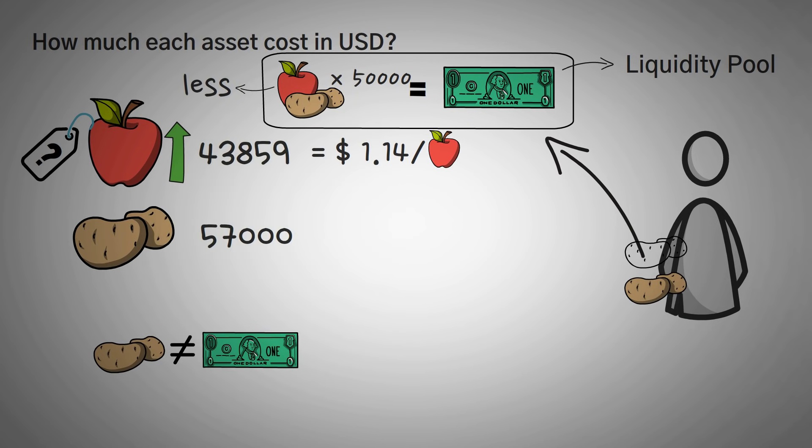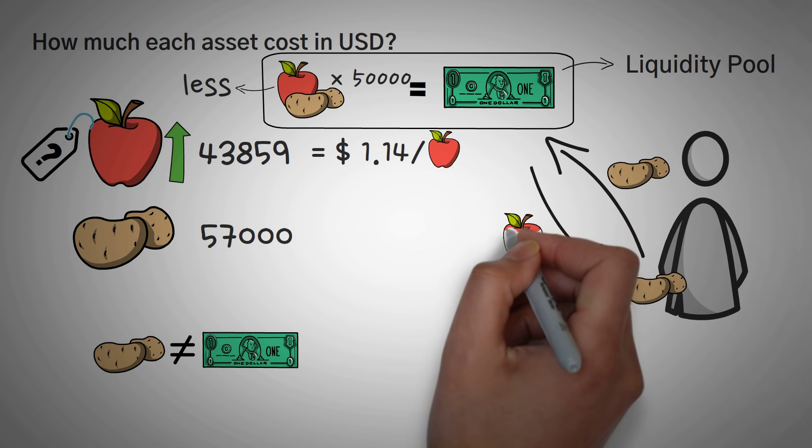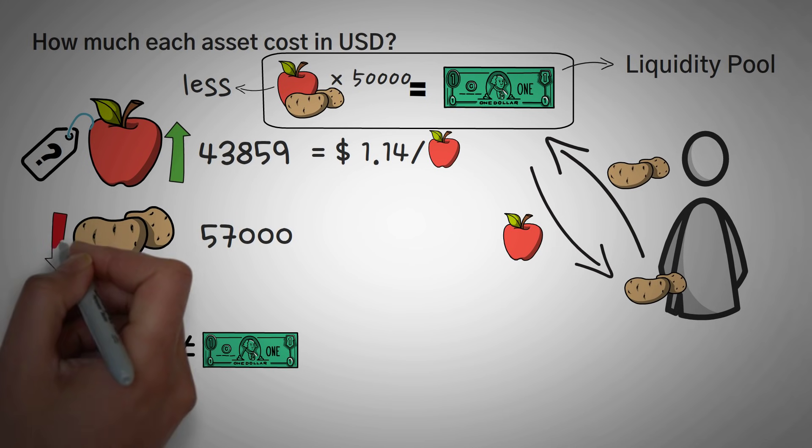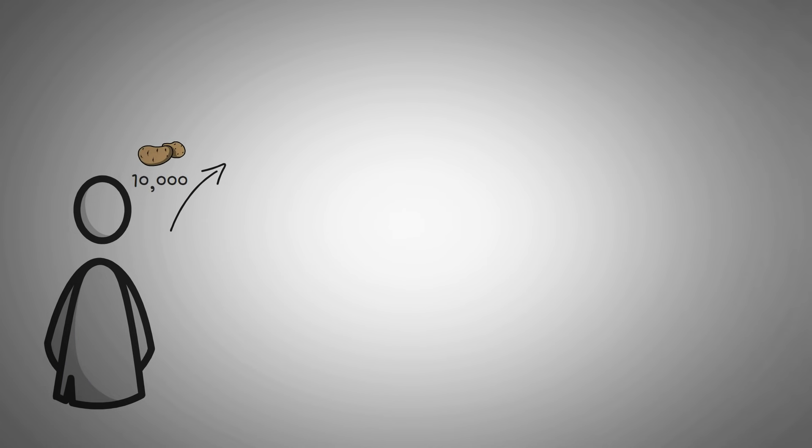So since this potato trader gave a bunch of potatoes to the liquidity pool and took out a bunch of apples, the price of apples went up and the price of potatoes went down, basically due to supply and demand, which is shown in the formula x times y equals k. Now I personally learned from examples, and this concept took me a week of studying to fully understand. So let's go over another example.